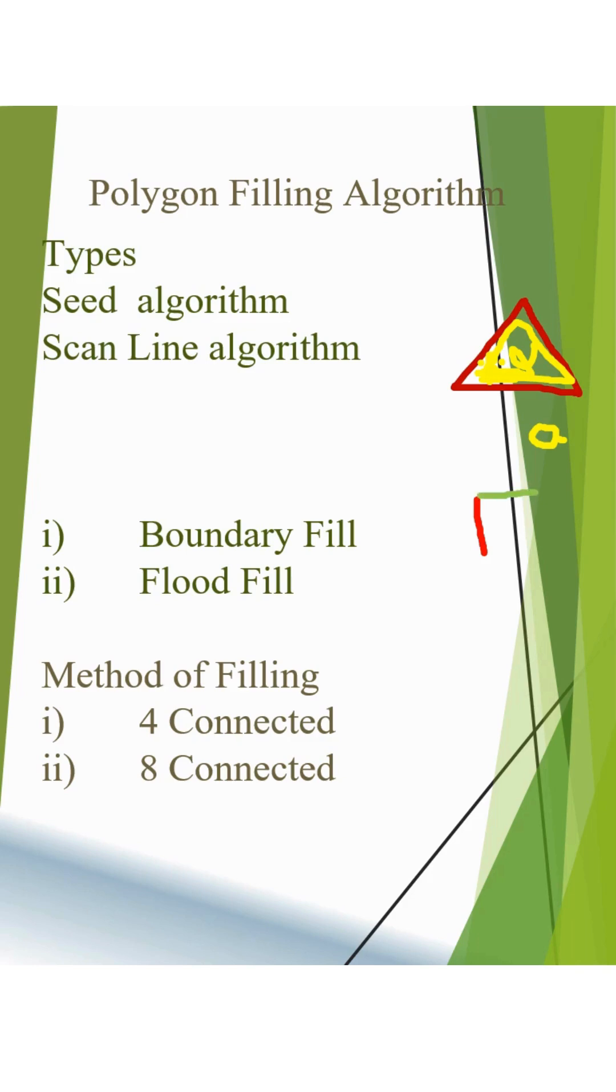This helps to fill the polygon with different polygon boundaries. In boundary fill, the boundary color should be a single one. In flood fill, we can have different boundary colors for each edge.